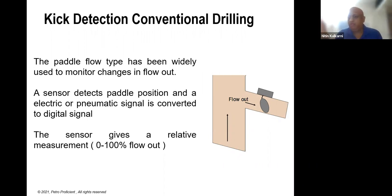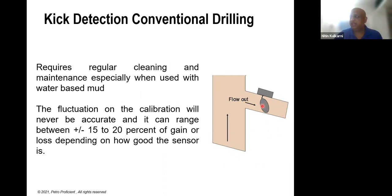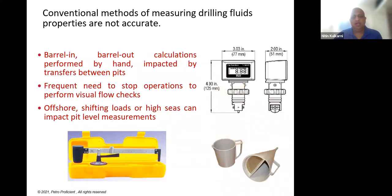The conventional flow paddle is highly inefficient and requires a lot of cleaning — if mud is stuck on it, the paddle won't move or moves very little, and things can get missed. The accuracy is very low. Similarly, pit volume sensors and mud balance are used to check mud density, but these are all manual processes requiring you to take mud from the pit and check density manually.